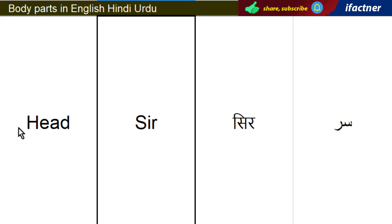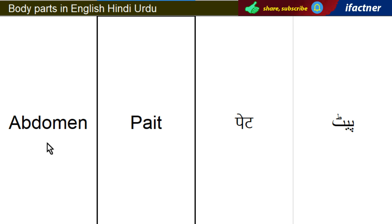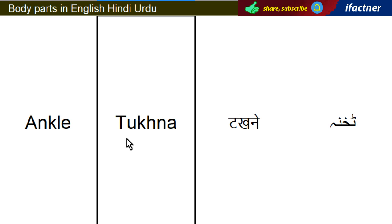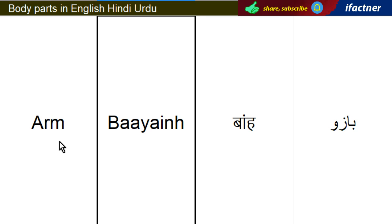Body parts in English, Hindi, Urdu with meanings. Sir — Head. Paet — Abdomen. Takhna — Ankle. Baazoo — Arm.